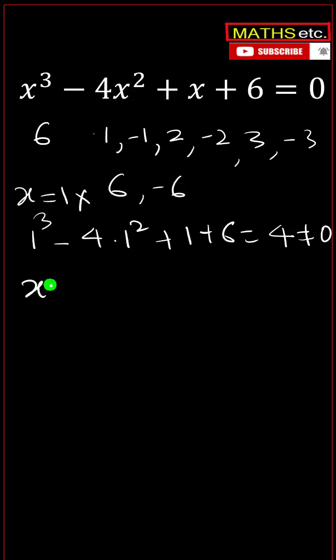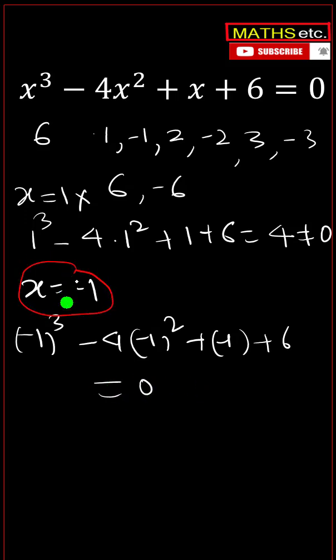Next we hit x equals to minus 1 value. Minus 1 cube plus 4 into minus 1 square plus minus 1 plus 6, and this equals to 0. So x equals to minus 1 is one of the three roots of the given cubic equation.